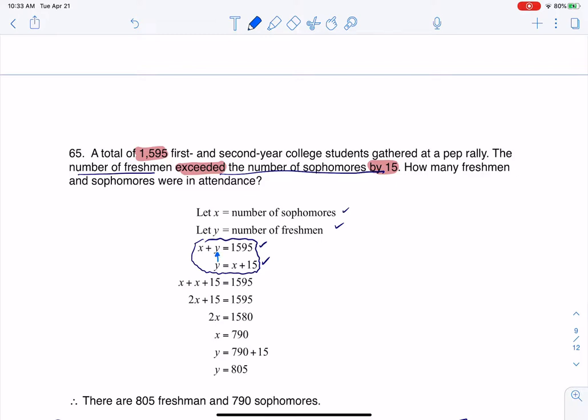I'm going to substitute that into the first equation. You see x plus y here, but now I'm writing it as x plus x plus 15 equals 1595.